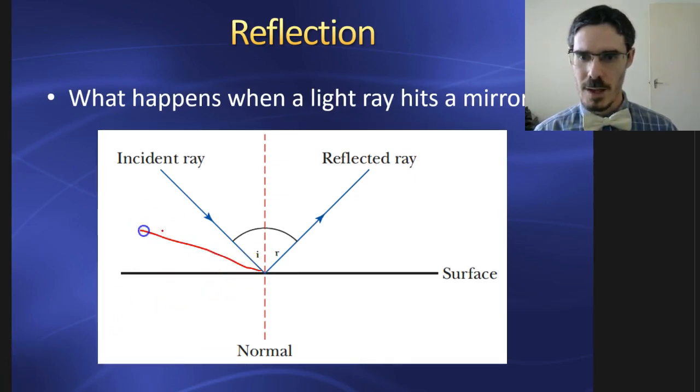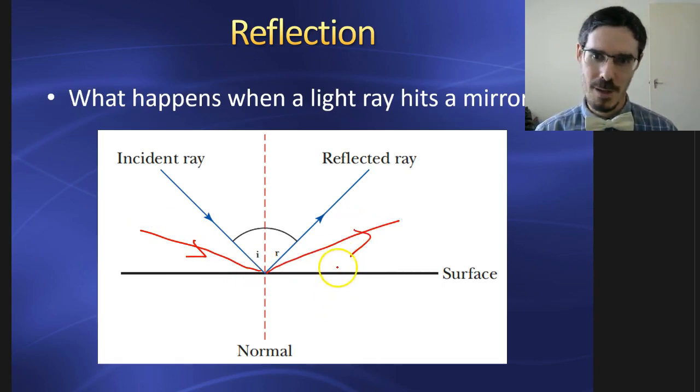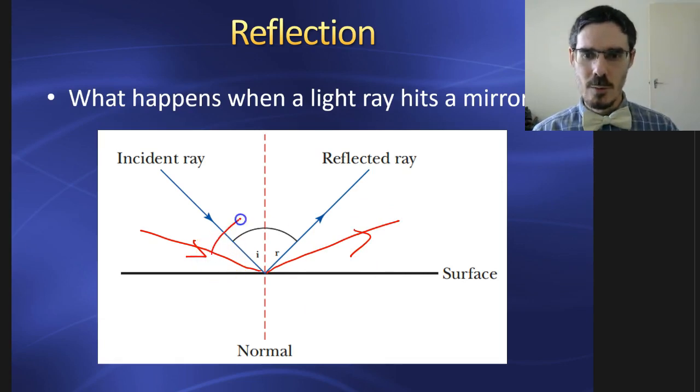If that angle was flatter, the light ray would be reflecting like that, approximately. This angle of incidence is the same as the angle of reflection.